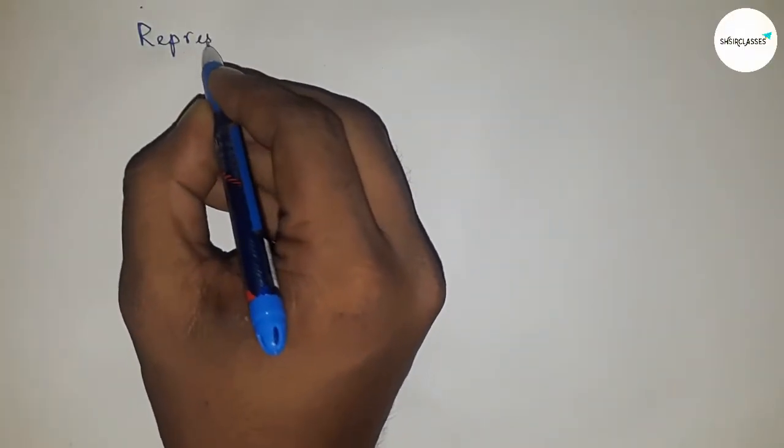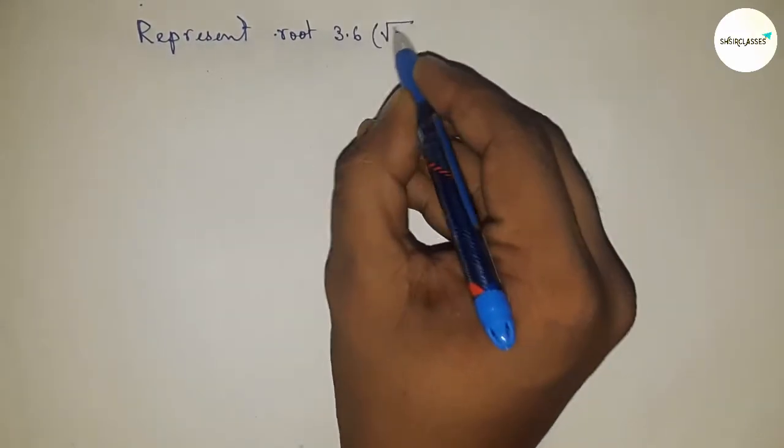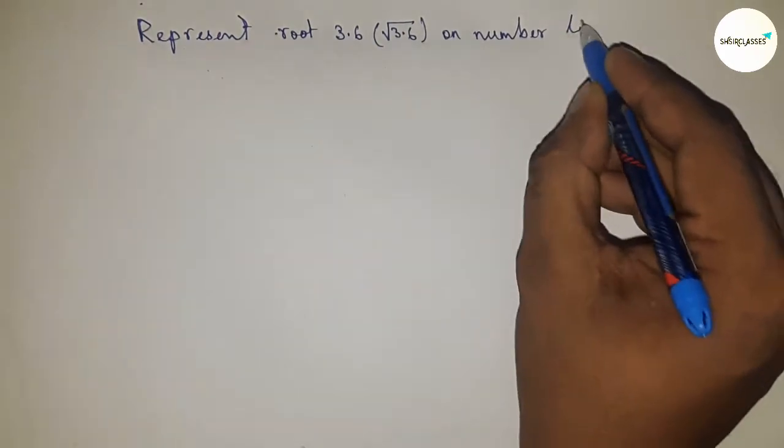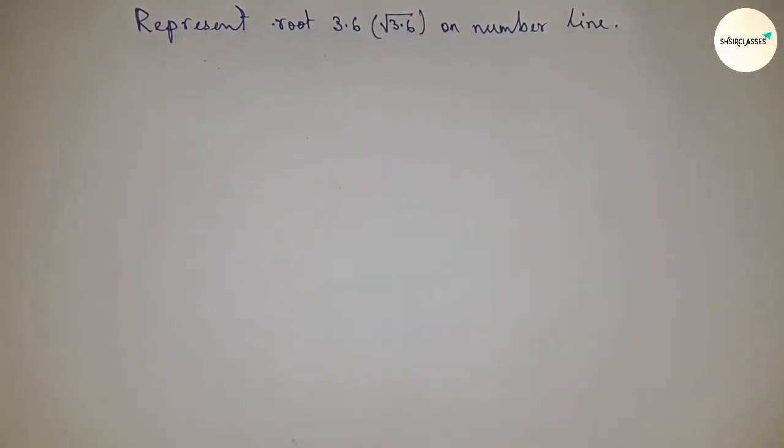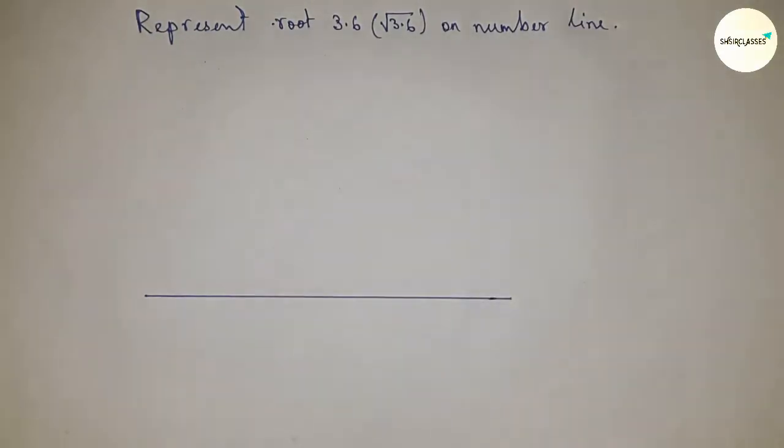Hi everyone, welcome to SSR classes. Today we're talking about the representation of root 3.6 on a number line. Let's start by first drawing a line of any length.